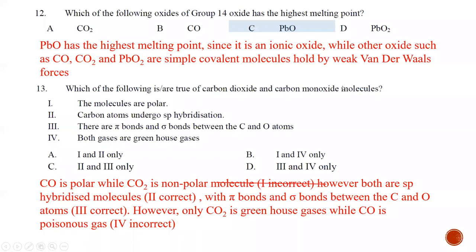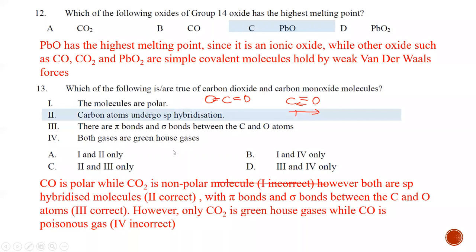Question number thirteen: which statements are true of carbon monoxide and carbon dioxide? Statement one — both molecules are polar — is wrong; only CO is polar and CO2 is non-polar. Statement two — both carbon atoms undergo sp hybridization — is correct. Statement three — there are pi bonds and sigma bonds between C and O — is correct; any double or triple bond contains both sigma and pi bonds. Statement four — both gases are greenhouse gases — is wrong; only CO2 is a greenhouse gas, while CO is a toxic gas. The best answer is C.